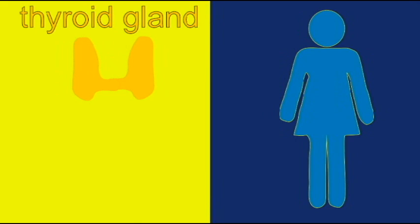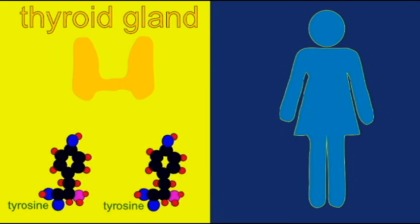The thyroid gland, located around the larynx in the neck, converts the amino acid tyrosine into a hormone. It does this by adding iodine to it.